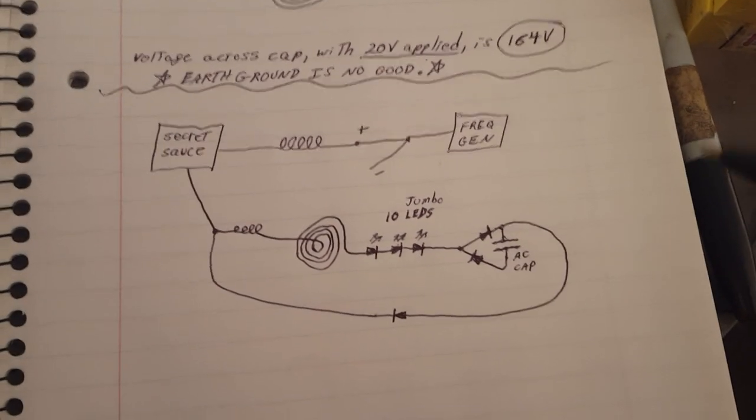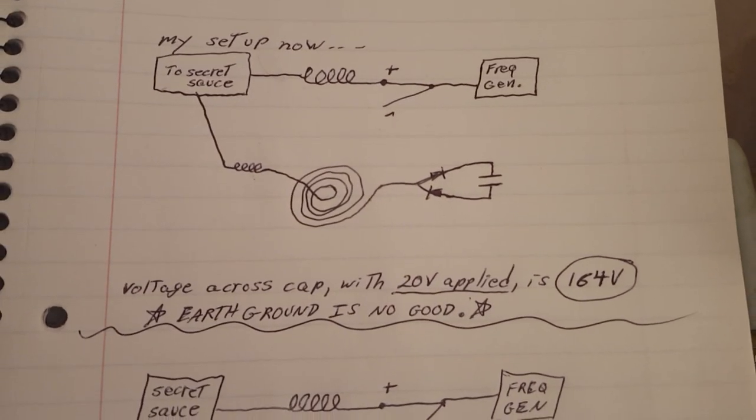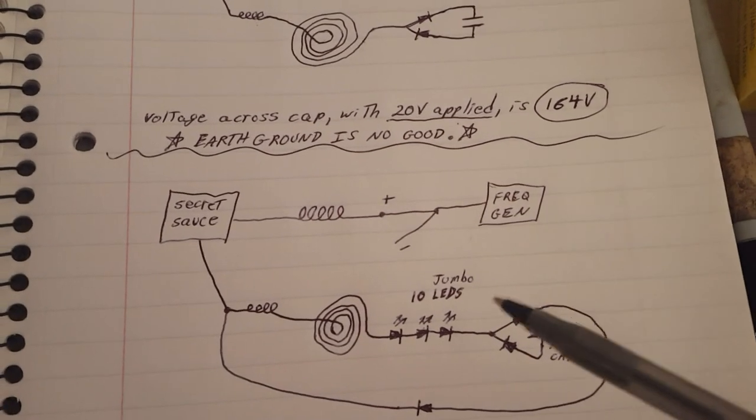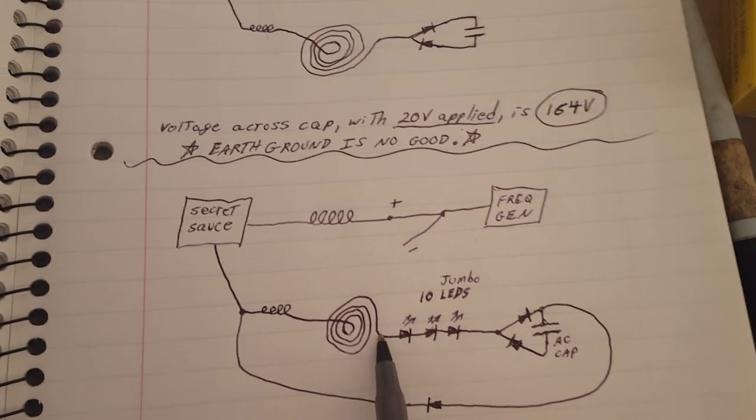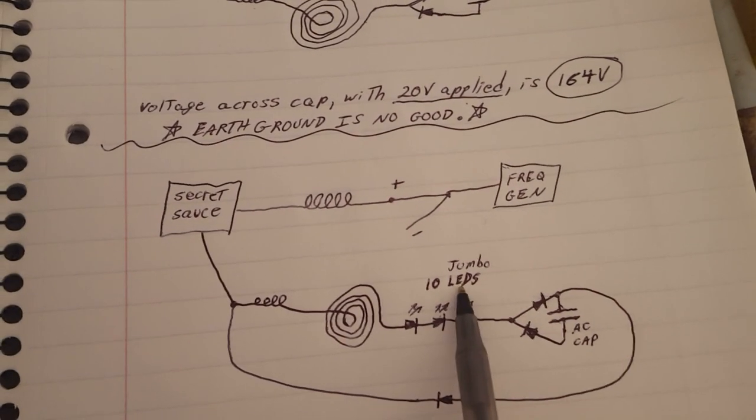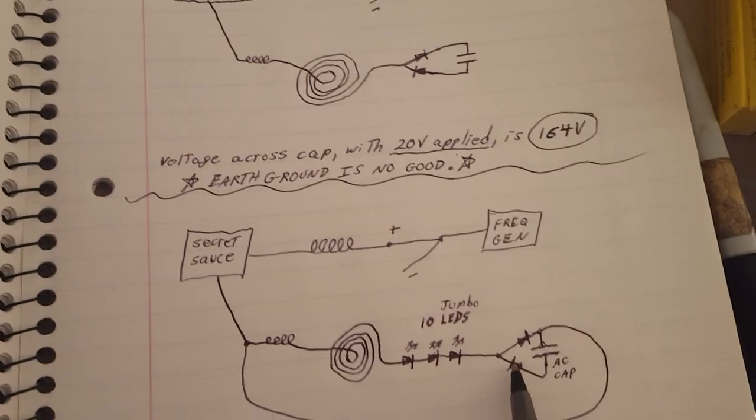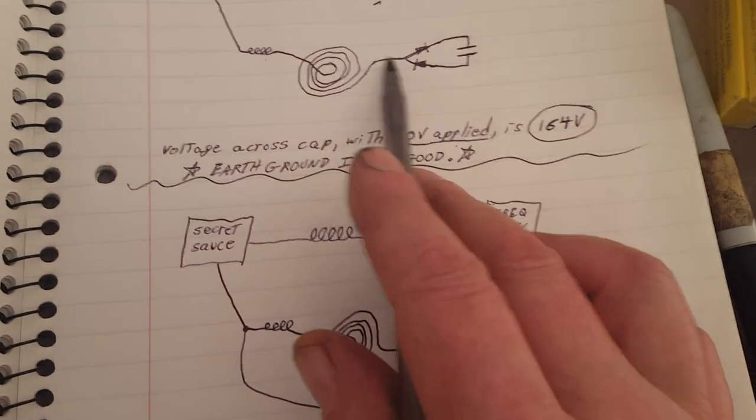All right, now let me show you this setup here. This was the last one. This is almost the same thing, we just added 10 LEDs in here. I only have three drawn but there's 10 jumbo LEDs here.